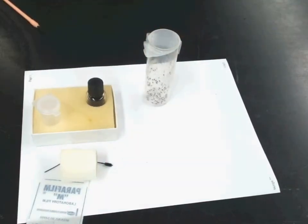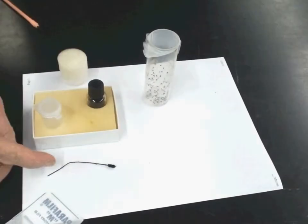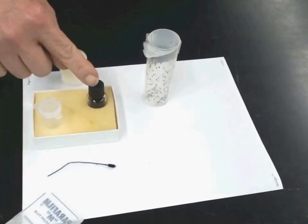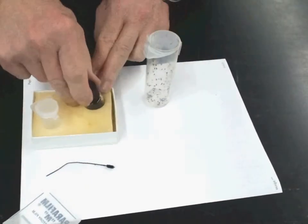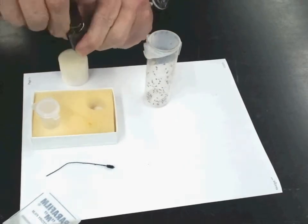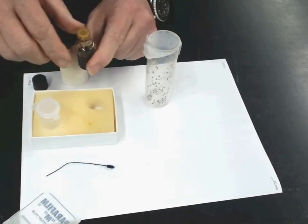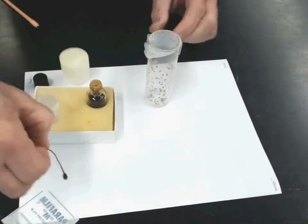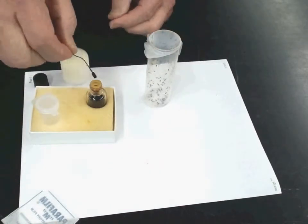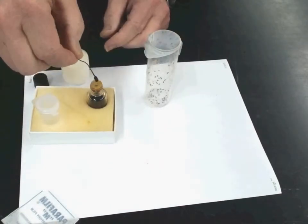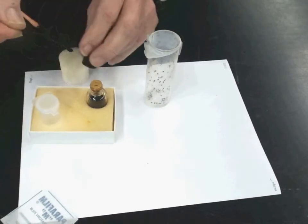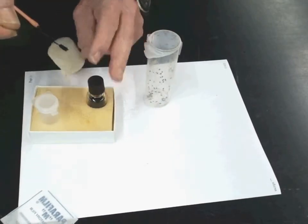Now you're going to want to load the wand with the anesthetization fluid. Open the fluid up and dip the wand in. Just one dip, not too much on there. Close it up because the stuff has a smell.